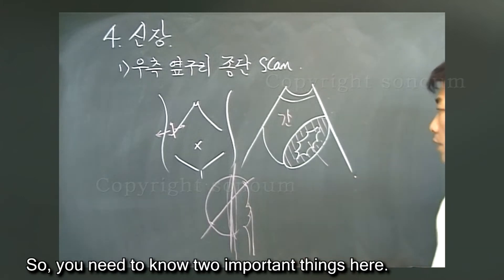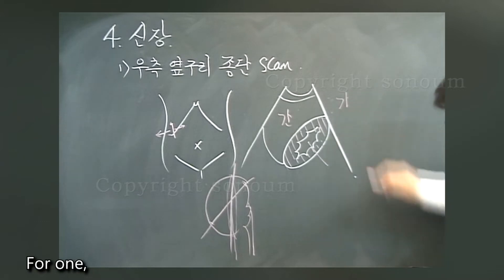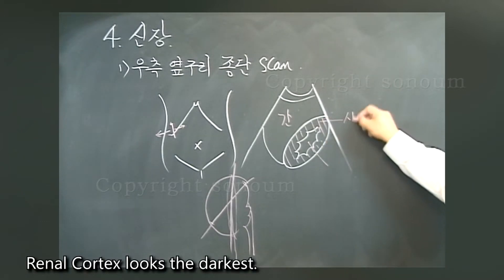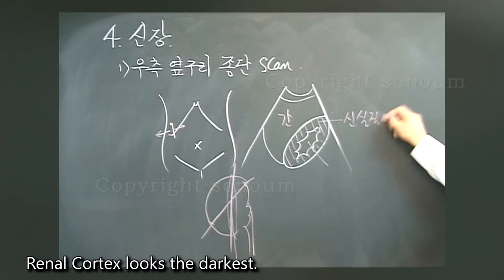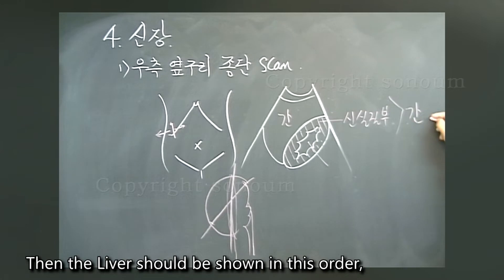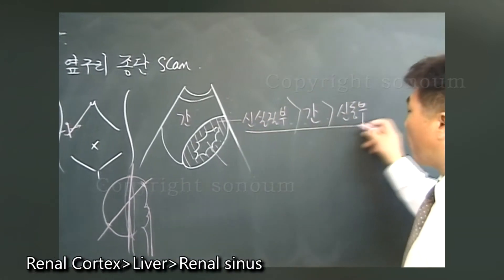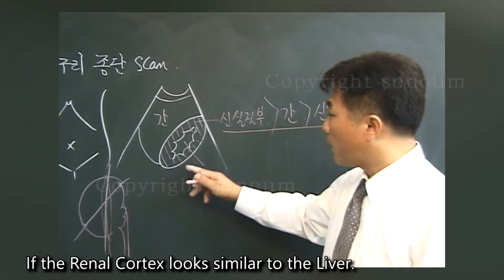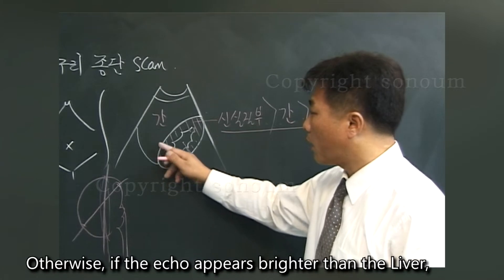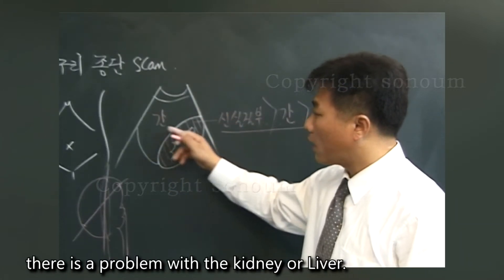You need to know two important things here. The renal cortex looks the darkest, then the liver, and then the renal sinus — the brightest. So the order is: renal cortex, liver, renal sinus. If the renal cortex looks similar to the liver, or if the echo appears brighter than the liver, there is a problem with the kidney or liver.